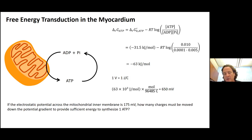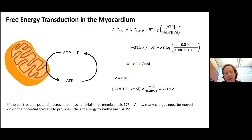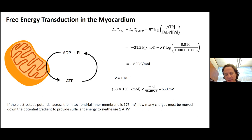Is 650 millivolts a lot or a little? A double-A battery delivers current at a potential of about 1.5 volts, so 650 millivolts is about half of that in terms of potential. It's also a lot more than the electrical potential across most biological membranes.